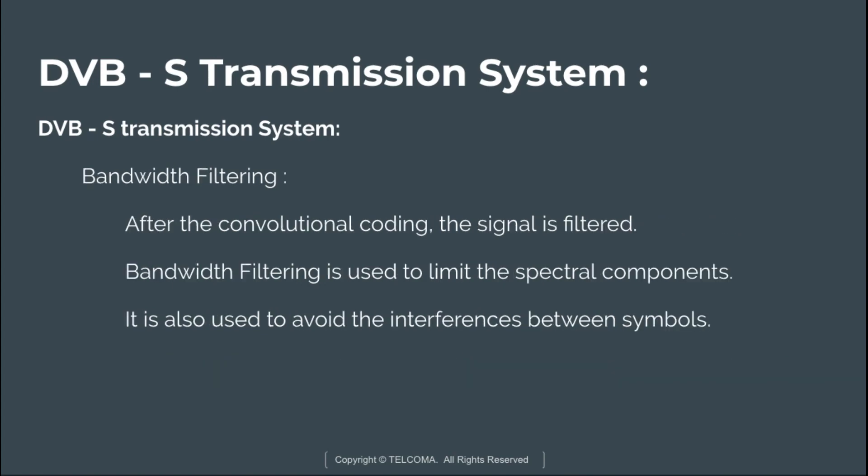Next is bandwidth filtering. After convolutional coding, the signal is filtered. Bandwidth filtering is used to limit the spectral components and also to avoid interference between symbols.